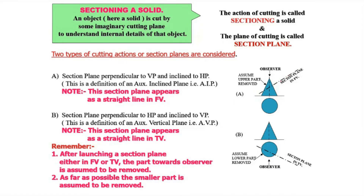In this case, if we cut this cone through this particular section plane and remove the upper part, the shape we obtain in the top view as well as the true shape of that section — that is our aim. That is the concept in this chapter. The second type of section plane is perpendicular to HP and inclined to VP — that is the concept of an auxiliary vertical plane.